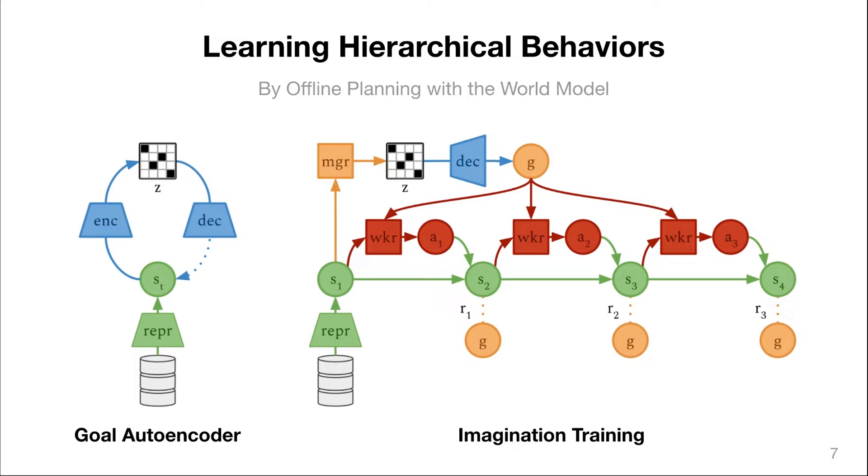The goal autoencoder makes it easier for the manager to choose goals. It takes the recurrent neural network states, shown in green, that are both high-dimensional and continuous and compresses them into a much smaller set of discrete latent variables through a simple reconstruction loss.